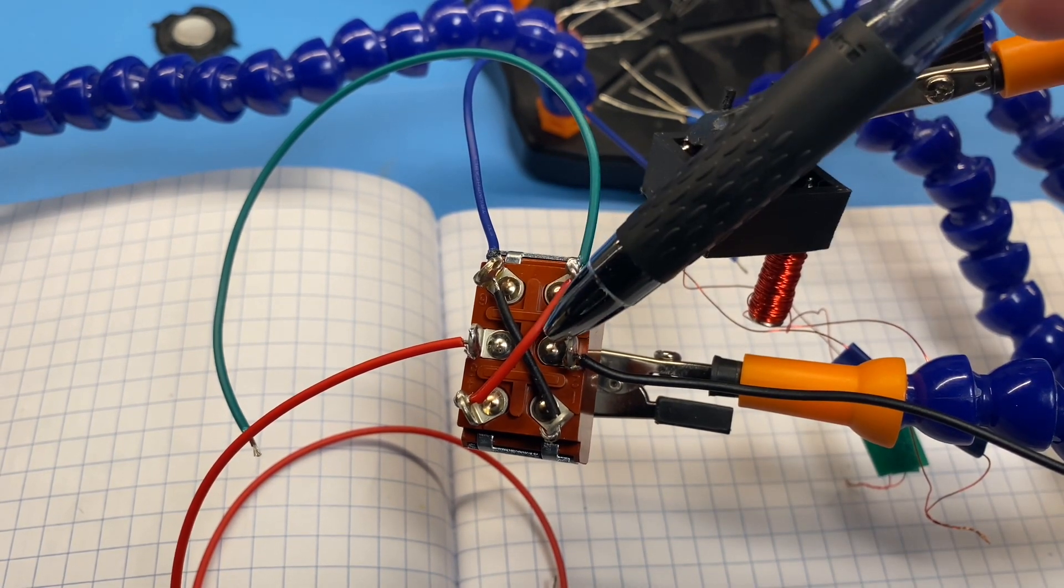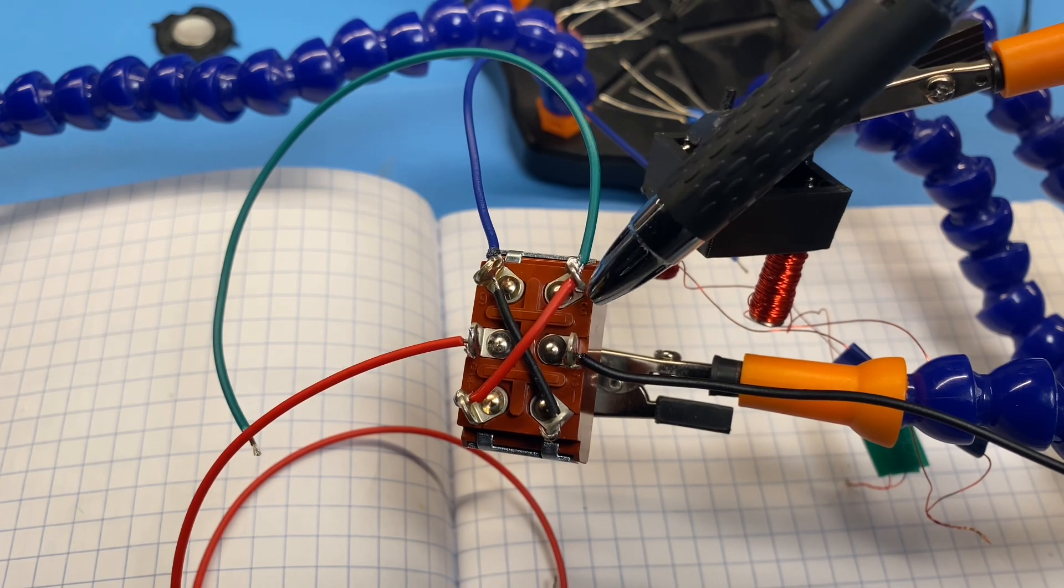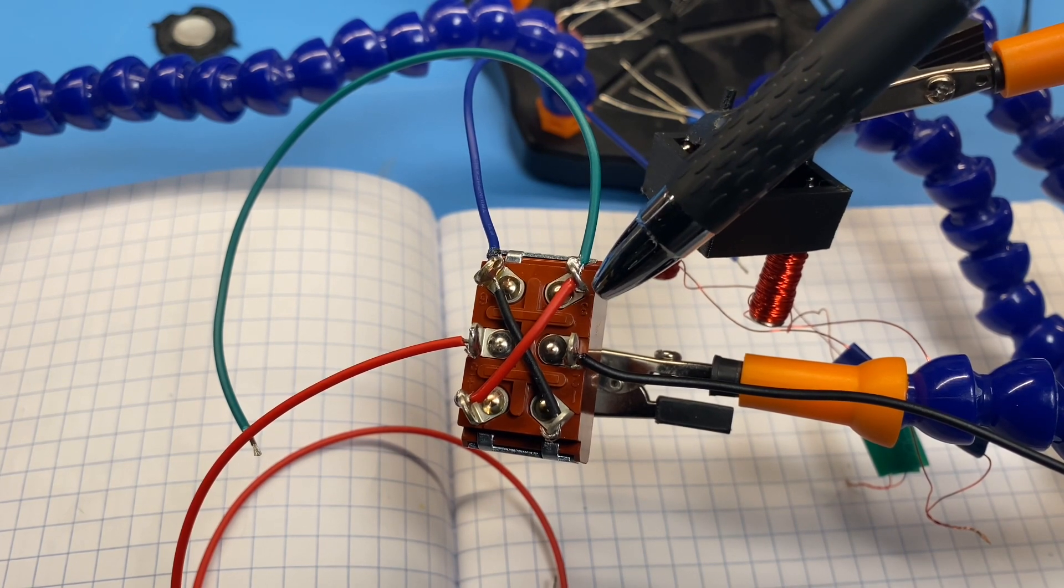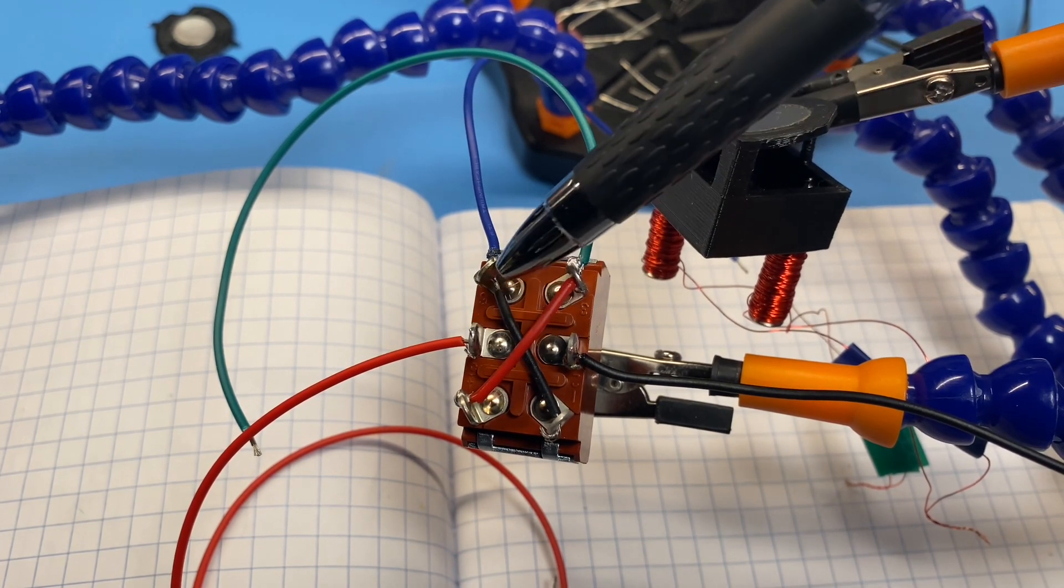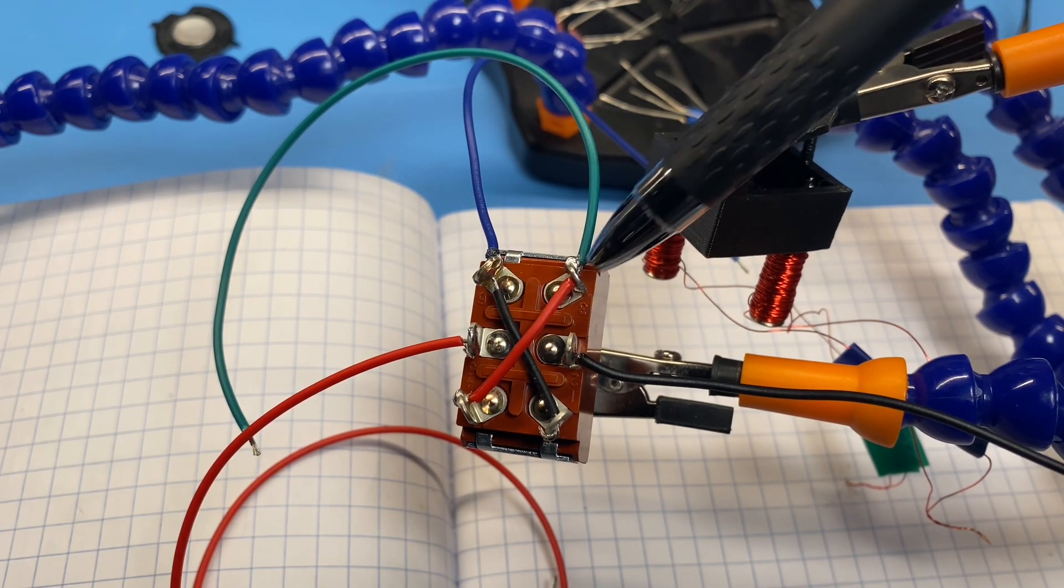In one position, the momentary switch will connect the middle set of lugs to this upper set. In that case, the red will be connected here to the blue, and the black connected here to the green.